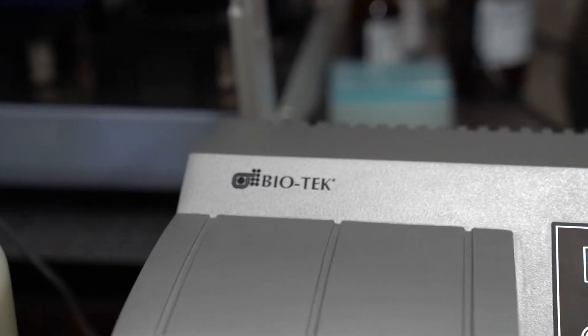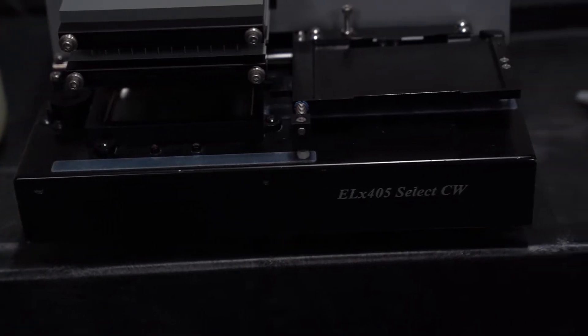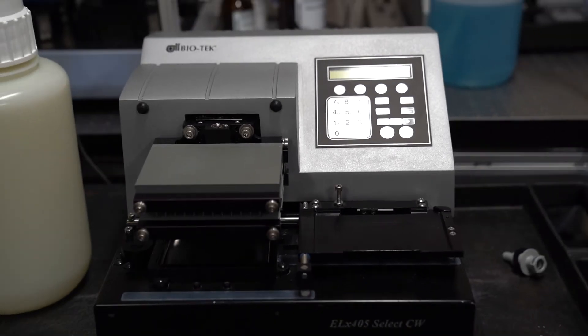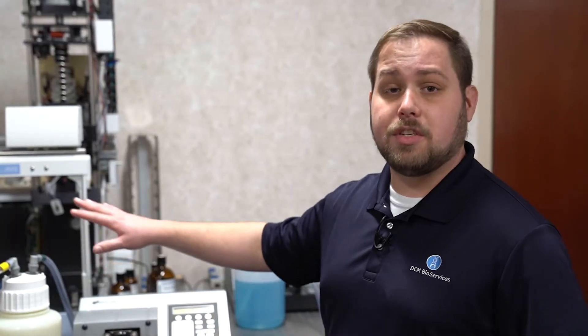The 1400 error code indicates a vacuum failure somewhere within the ELX405. Oftentimes it could be a faulty fuse on the pump, the pump may not be switched on, or there could be a tubing disconnection somewhere in the waste line.